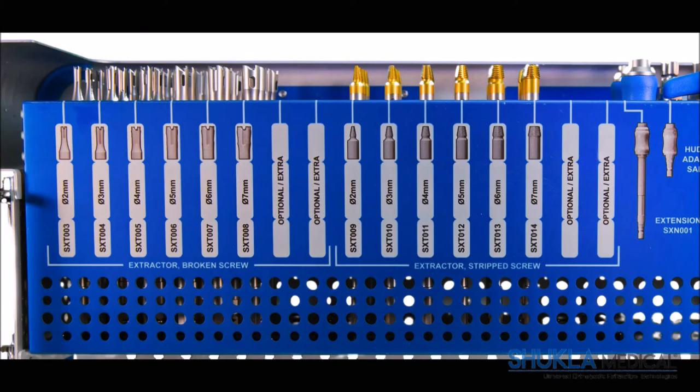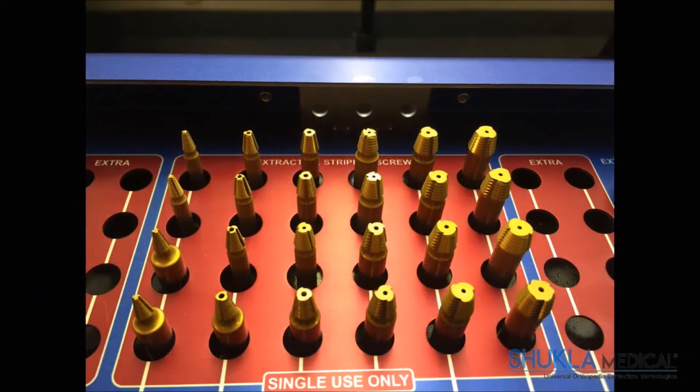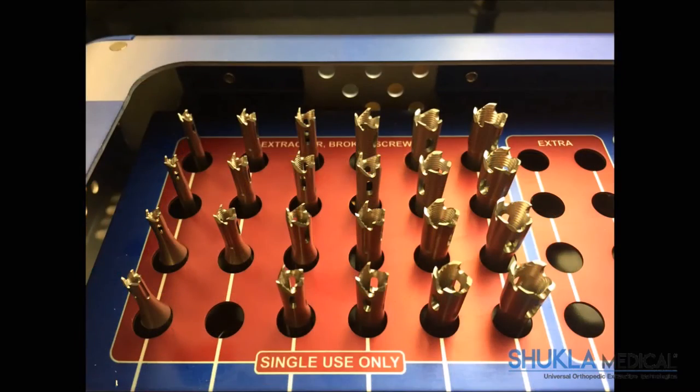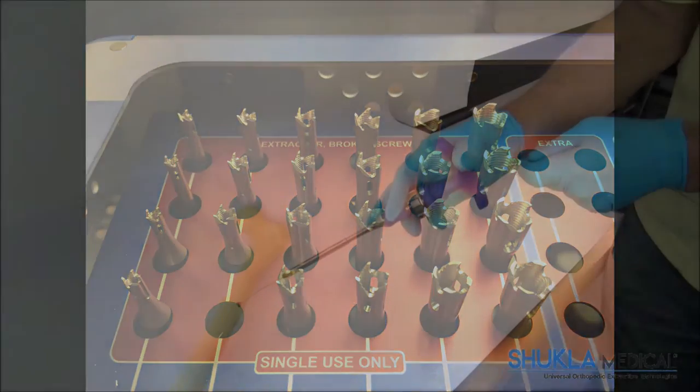The front vertical face of the case shows the name, part number, and location of each of the components in the system. The Extract-All Screw V2 system contains single-use only components. The location of these components are clearly highlighted in red and marked as single-use only.